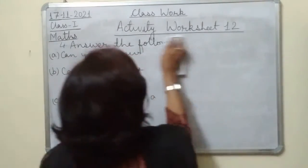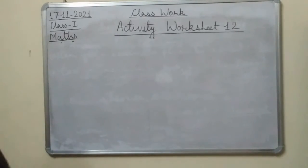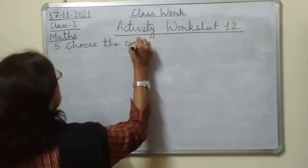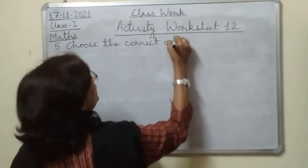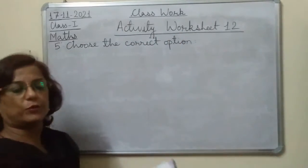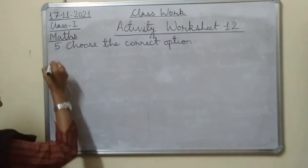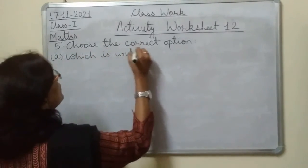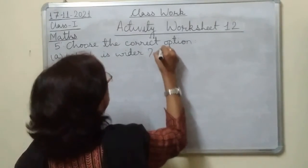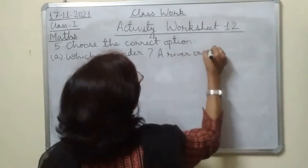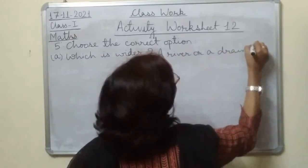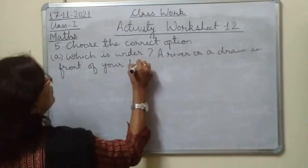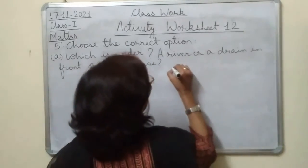The fifth question is: choose the correct option. Question A is: which is wider — a river or a drain in front of your house? The answer is river. A river is much wider than a drain.